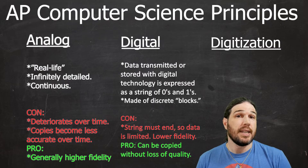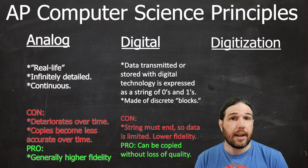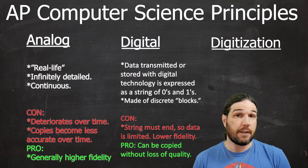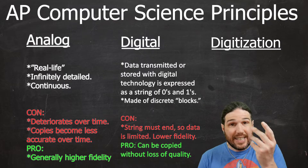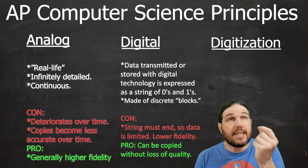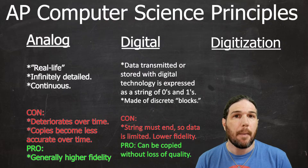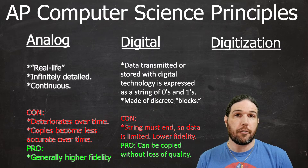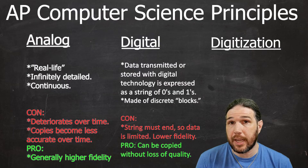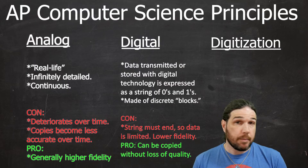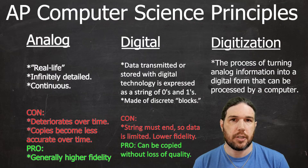To summarize: digital information has a lot less detail than analog, but it can be preserved forever. Analog is the world we live in — it is infinitely detailed and infinitely large, and as such, cannot be saved on a hard drive. The process of taking analog information and making it digital, like I'm doing right now with this video, is called digitization.